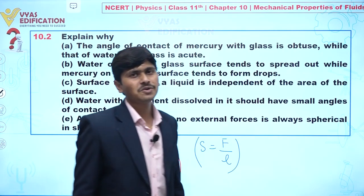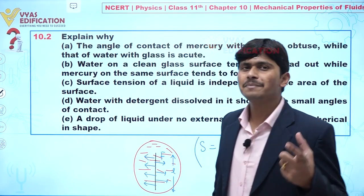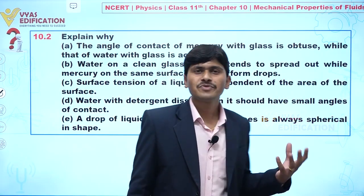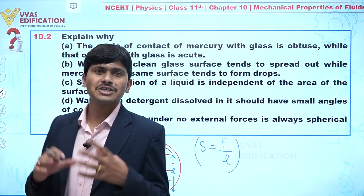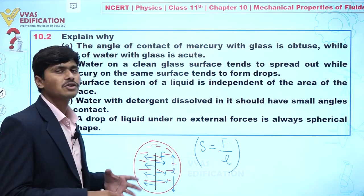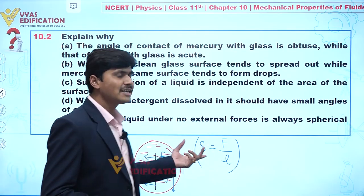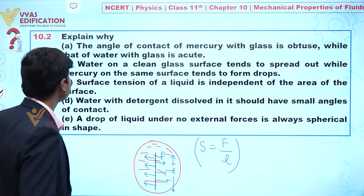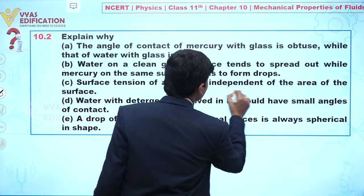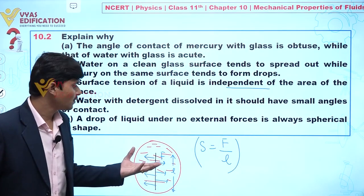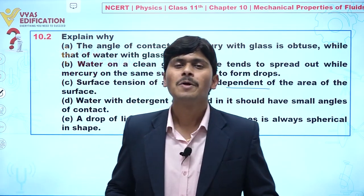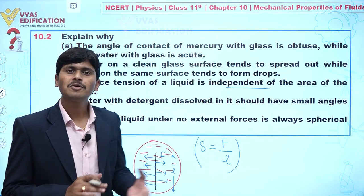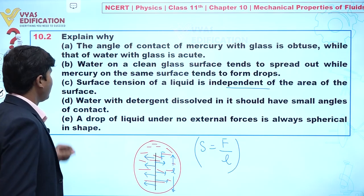From the formula S = F / L, you can see that surface tension depends on the nature of the liquid and on temperature, but it is independent of area. Since no term related to area appears in this expression, surface tension of a liquid is independent of the area of the surface.